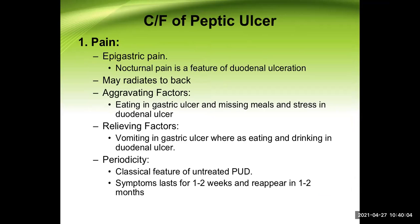Regarding clinical features of peptic ulcer: the primary symptom is pain in the epigastric area. The pain can occur any time, but nocturnal pain is a feature of duodenal ulceration — specifically early morning, also called hunger pain, occurring when the stomach is empty.